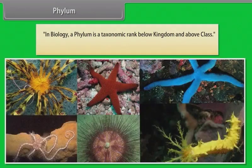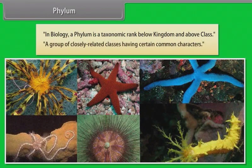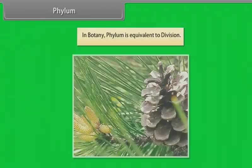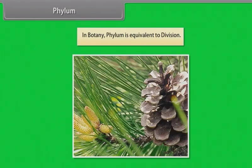In biology, a phylum is a taxonomic rank below kingdom and above class. It is a group of closely related classes having certain common characters. In botany, phylum is equivalent to division.